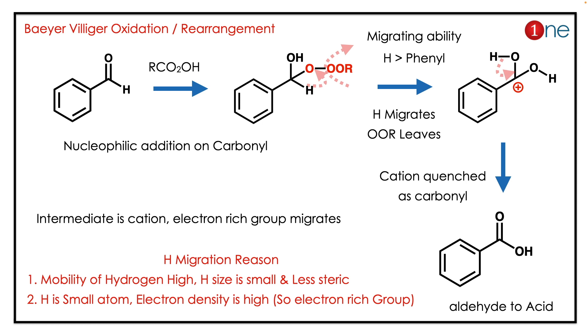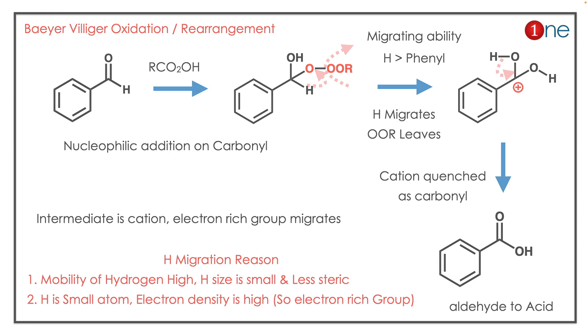Hydrogen migrates, forming a cation near the oxygen; the cation is quenched as a carbonyl, and finally you have an acid. So basically it's an oxidation reaction that converts aldehyde to acid. The key concept here is that in Baeyer-Villiger oxidation, the electron-rich group migrates.